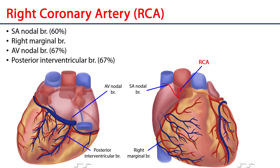The RCA then travels down in the coronary sulcus toward where the right border meets the inferior border, giving off branches to serve the right ventricle. One of these is a named branch called the right marginal branch, which hugs the inferior border of the heart.